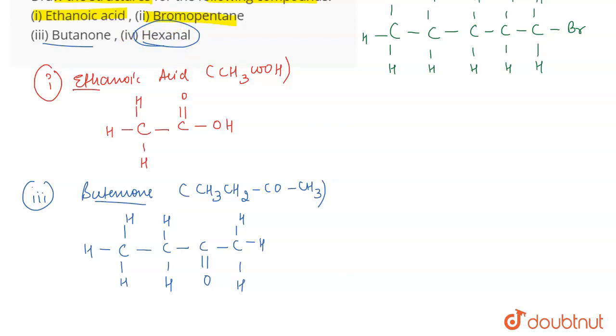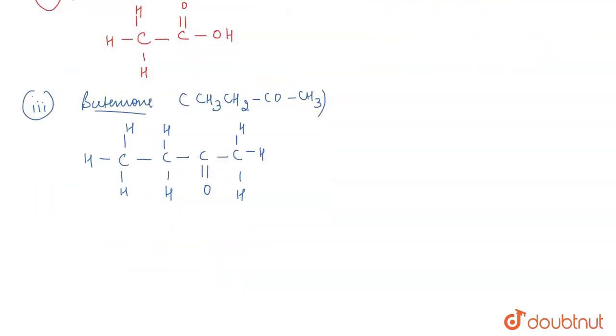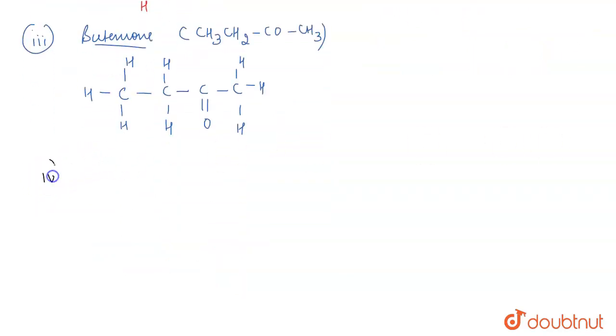Now let's come to the fourth one, which is hexanal. Hexanal is an aldehyde. It has six carbon atoms and one of the carbon atoms is an aldehyde group, so CH3-CH2-CH2-CH2.